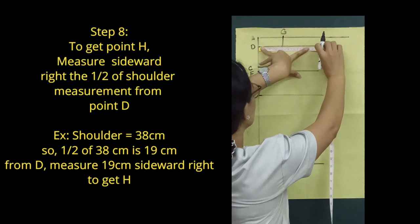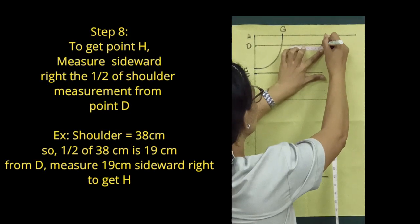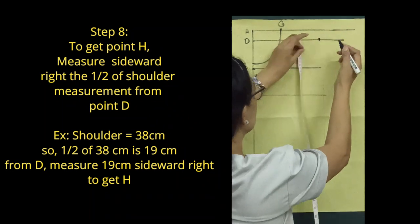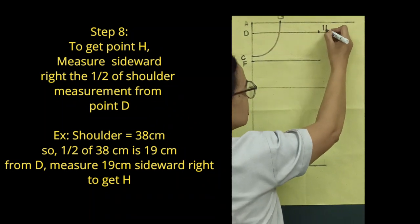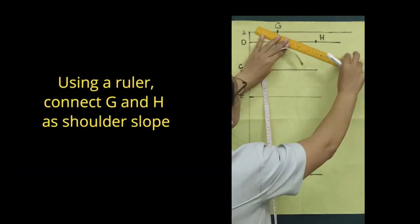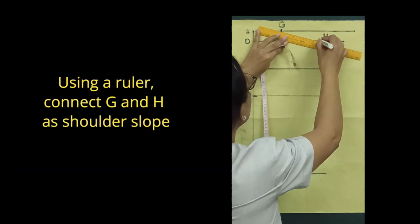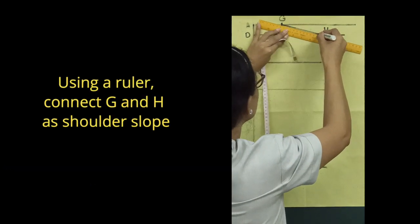Step 8: To get point H, measure sideward right the 1/2 of shoulder measurement from point D. Using a ruler, connect G and H as shoulder slope.